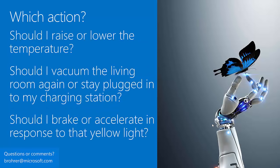Finally, the fifth question is 'which action should I take?' In cases where a machine — especially a robot — needs to make a low-consequence decision it gets to make frequently, reinforcement learning is a way to do this and learn from experience. For instance, an automatic temperature control system asks 'should I raise or lower the temperature?', a little vacuum cleaner asks 'should I vacuum the living room or stay plugged in?', and a self-driving car asks 'should I brake or accelerate at that yellow light?' This is a bit different from the other questions; we won't talk about it further today.